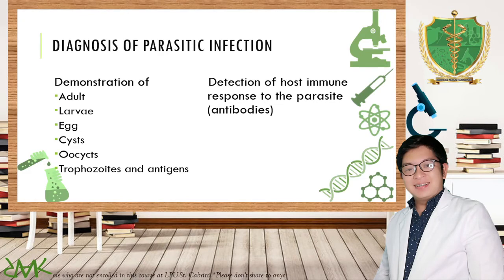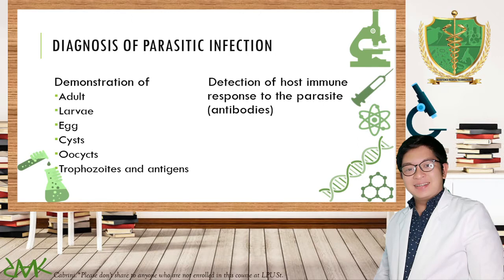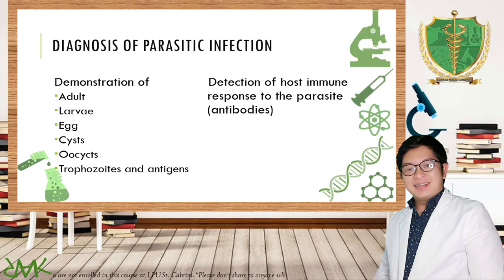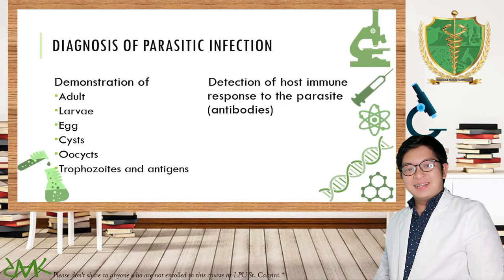For the demonstration of parasites, samples may demonstrate eggs, larvae, adult, cyst, oocyst, trophozoite, and antigens. For adult, larvae, eggs, cysts, oocysts, and trophozoites, typically the sample is stool — sometimes sputum, sometimes urine. For antigens, we can use blood, and stool samples may also be used for EIA.